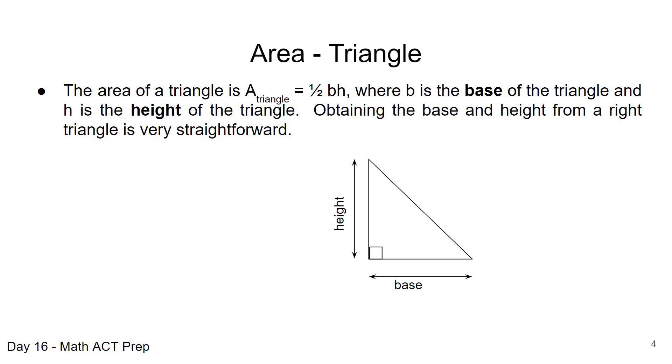Area of a triangle is 1 half the base times the height, b times h. When we're looking for base and height, if we're given a right triangle, it's usually very straightforward. We're given like in this figure below, we have the base along the bottom and the height across the top and we're just going to do one half of that.